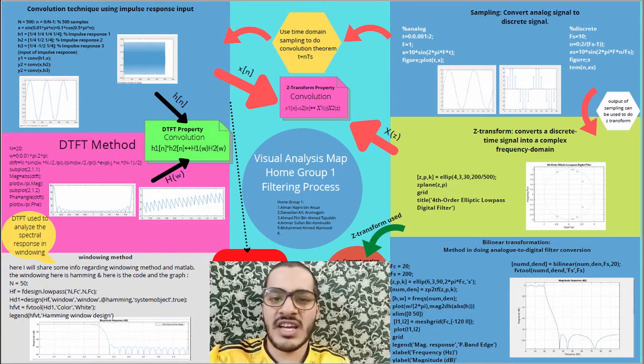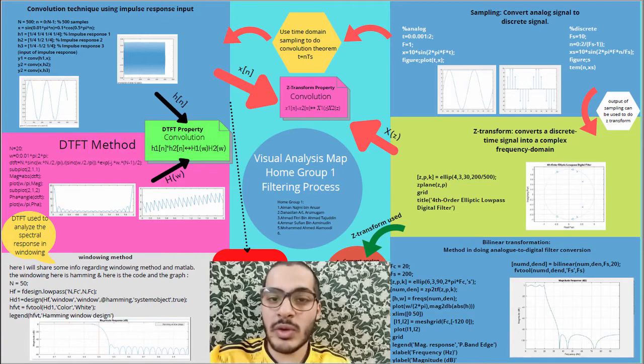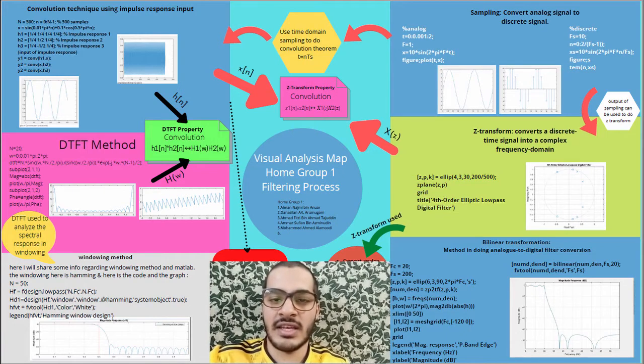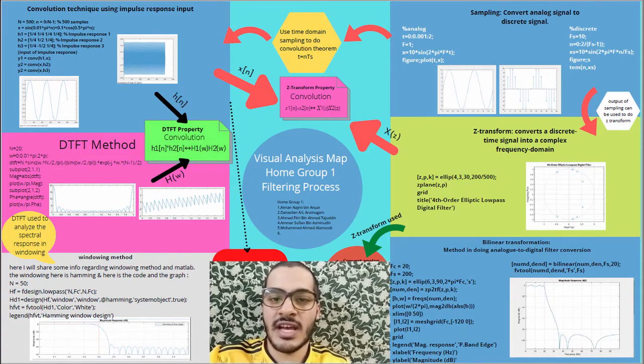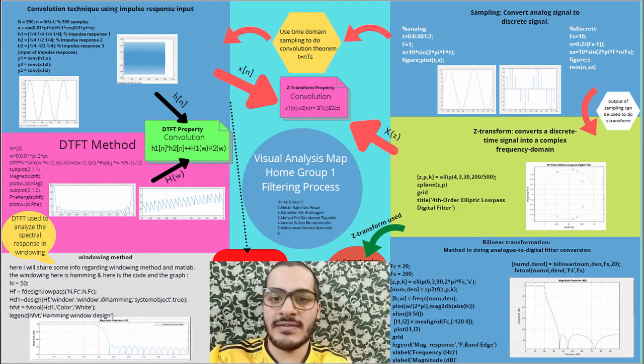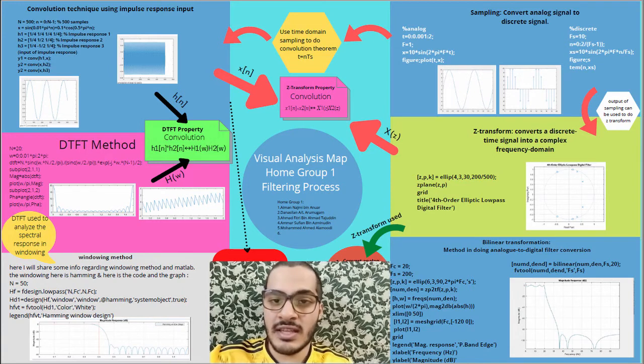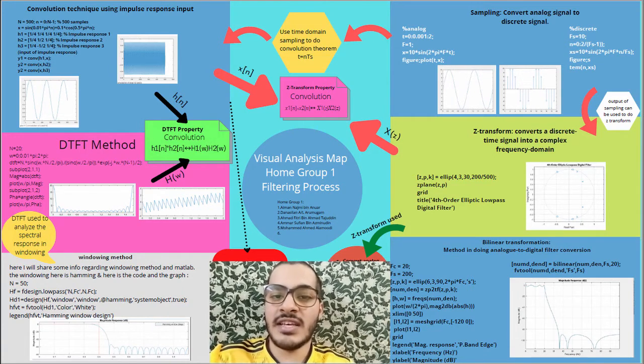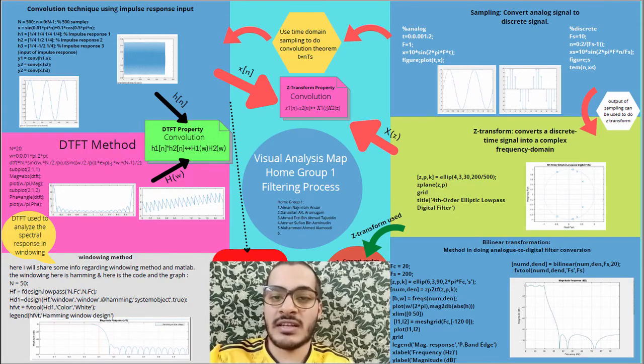Next, designing a filter based on the windowing method is done by truncating the ideal filter, which is an IIR filter with an infinite length into an FIR filter. The process is done in the time domain and later the DTFT is used to analyze the filter characteristics.